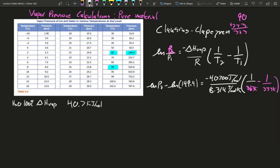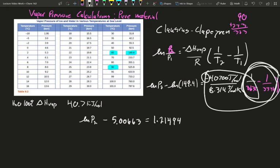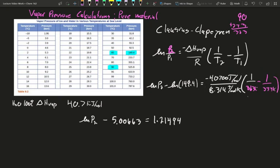Run a few of those values. The natural log of our pressure 2 minus 5.00663 is going to equal 1.21494. So this will give us another negative, which will cancel that negative, and so we get a positive value out if we multiply and divide all this. So I need to adjust, I need to add 5.00663 to both sides.